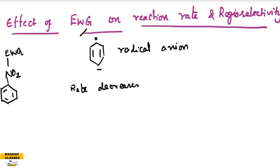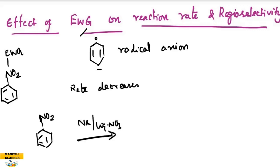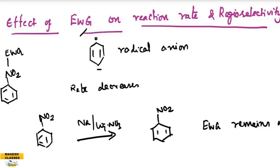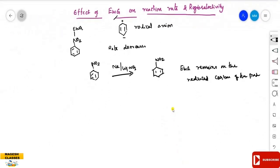With an electron-withdrawing group present, the product is also different. When nitrobenzene is used in Birch reduction with sodium and liquid ammonia, the electron-withdrawing group remains on the reduced carbon of the product. So the conclusion is: electron-withdrawing groups decrease the reaction rate, and the substituent ends up on the reduced carbon.